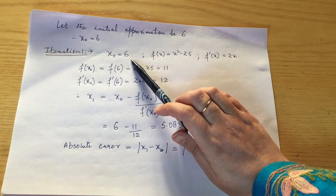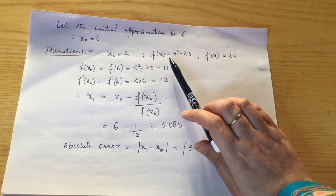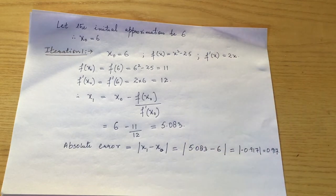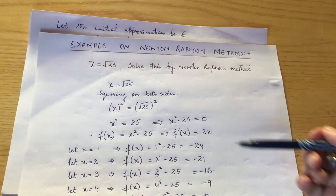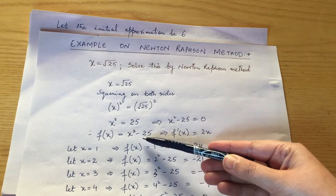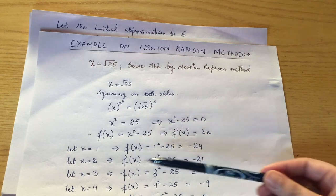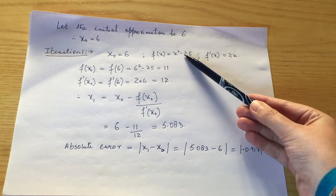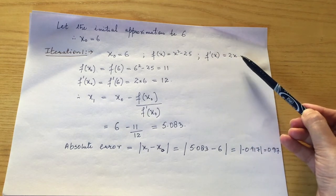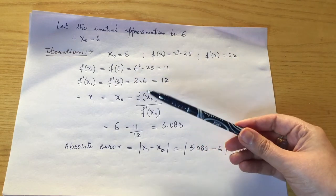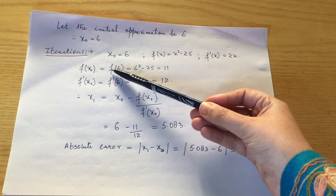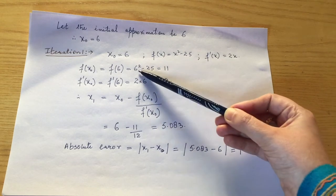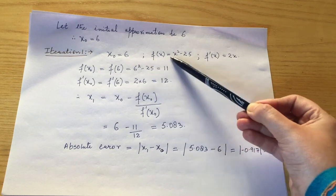In iteration 1, x₀ = 6. Our function is f(x) = x² - 25 and f'(x) = 2x. We calculate f(x₀) = f(6) = 6² - 25 = 11.